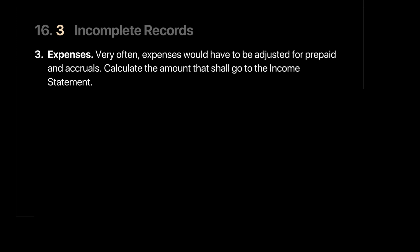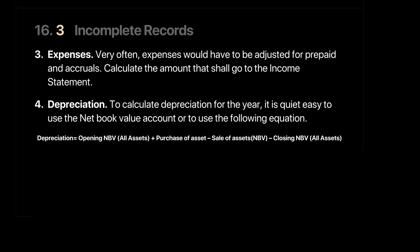Once we've covered expenses, we also need to calculate depreciation. We can use a simple net book value account or the revaluation method equation. Many of these businesses don't have resources to use the straight-line or reducing balance method; instead they track opening and closing net book value. The equation is: opening net book value, plus assets purchased, minus assets sold at net book value, minus depreciation, equals closing net book value.